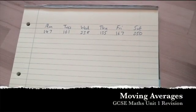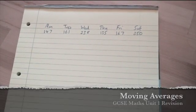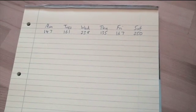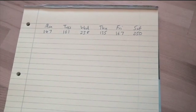Calculating Moving Averages. The first thing on a moving average question is to work out whether you're doing three-point or four-point moving averages. In this case, we're going to do three-point moving averages.